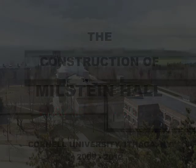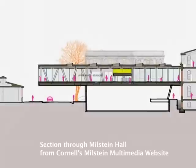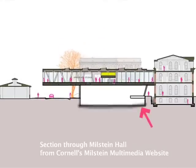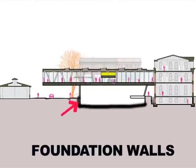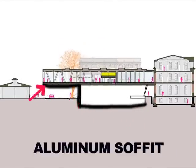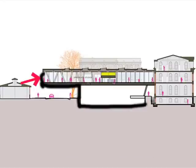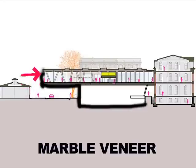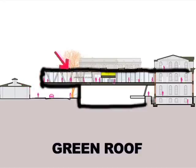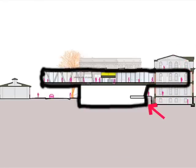A line drawn around the boundary between the inside and the outside of Milstein Hall would include the basement slab, foundation walls, first floor glazing, aluminum soffit panels, thin marble veneer, second floor glazing, more marble veneer, the green or vegetated roof, and then more of the same coming down on the other side, forming a closed circuit.